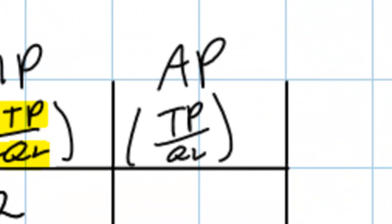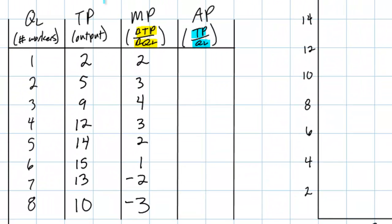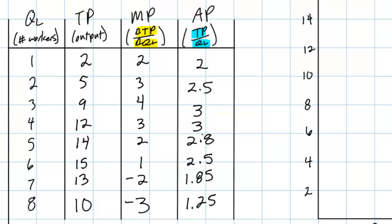Next we calculate the average product, which is simply the output divided by the number of workers — the total product divided by the quantity of labor. At the end of round one we had one worker producing two units, so the average product was two divided by one. At the end of round two, two workers had made five units, giving us an average product of 2.5. Here we have the average product at each quantity of labor — the total product divided by the number of workers — telling us the output per worker.